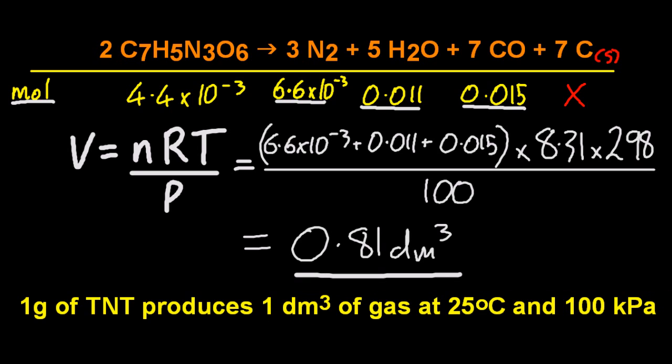That comes out at 0.81 decimeters cubed. That's about right, isn't it? Yeah. So a gram makes about a decimeter cubed.